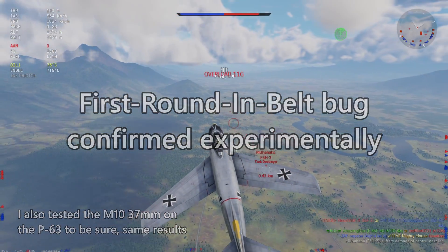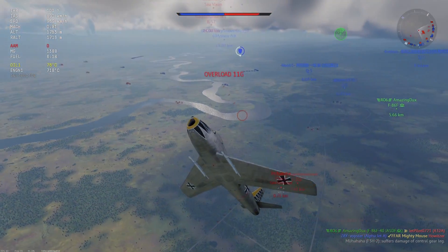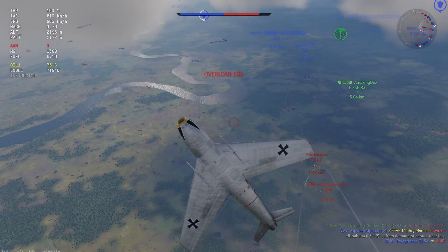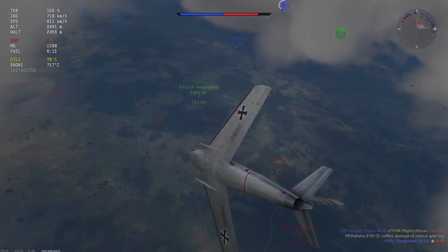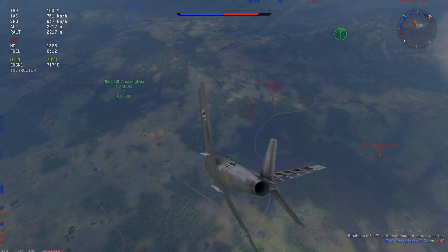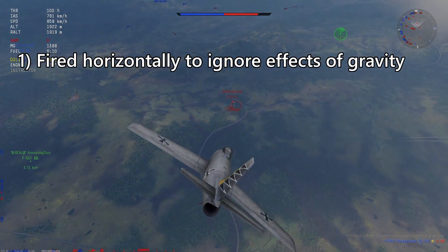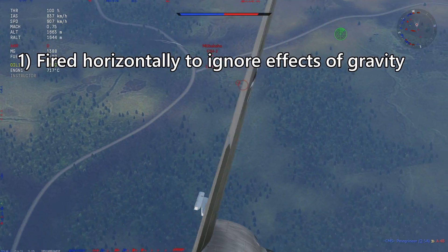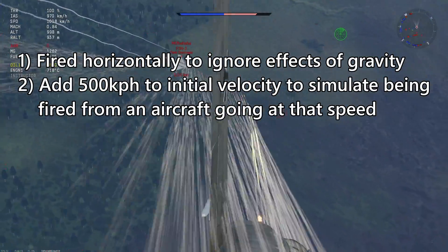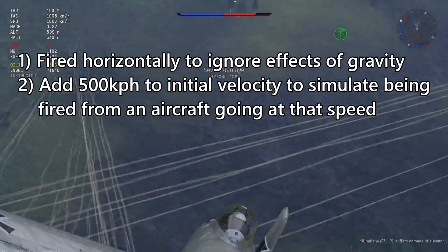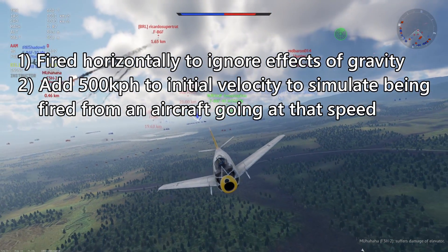So now for some comparisons between some WWII rounds. I'll just be taking what I think is the most effective round in each belt and using its velocity, because it'll be kind of annoying to account for this bug for each one of these cases. I'll assume the scenario in which the bullet is fired horizontally so that we can neglect gravity again, and I'll also add 500 km/h to the muzzle velocity of each round to simulate the rounds being fired from an aircraft traveling at that speed.